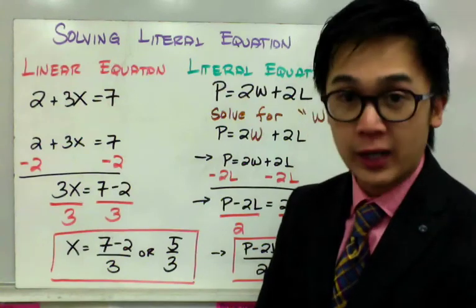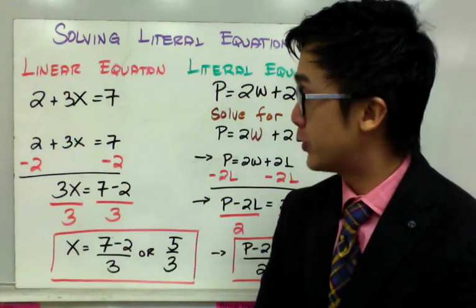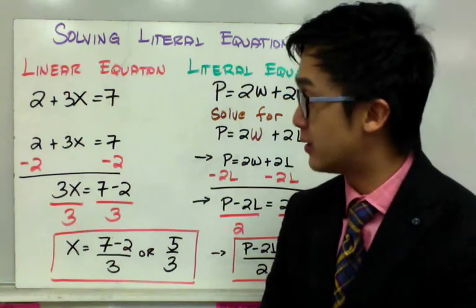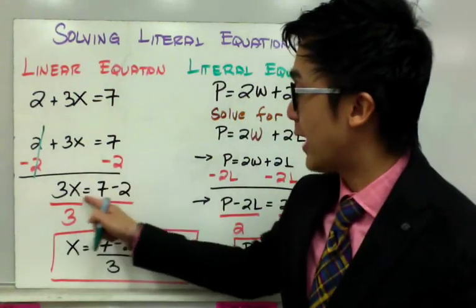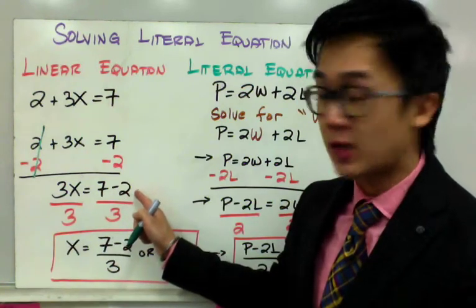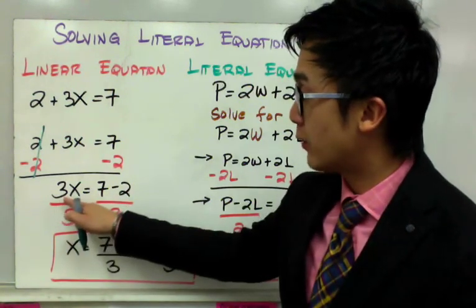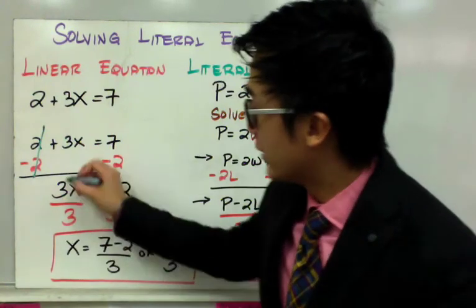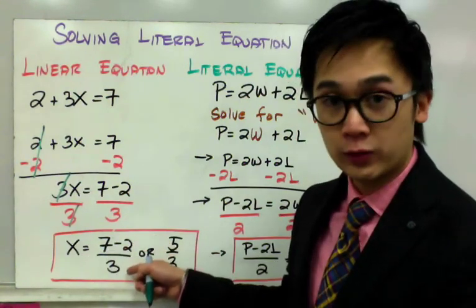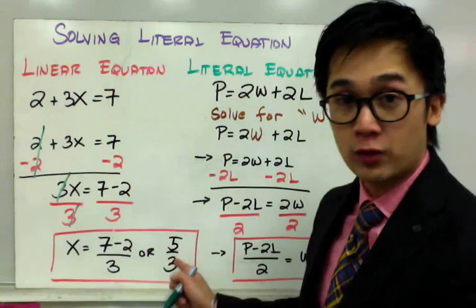In this next example, I have the linear equation 2 plus 3X equals 7, and we need to get rid of 2 and 3 from X. First, get rid of 2 by subtracting 2 on both sides, so it cancels out and you're left with 3X equals 7 minus 2. Then get rid of 3 by dividing both sides by 3, so that cancels out, leaving X equal to 7 minus 2 all over 3. If you simplify further, subtracting 7 and 2 gives 5 over 3.